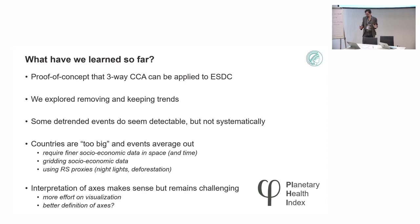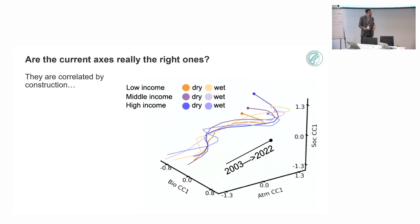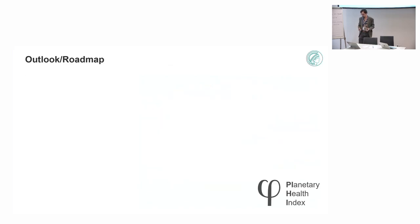The interpretation of axes also makes sense for now, but remains challenging. And we need to do some effort on visualization and the definition of the axes. Because one thing, I showed you these trajectories, but to a point, they are quite correlated by construction. So should we really see bio CC1 versus atmospheric CC1 and socioeconomic CC1? Maybe we need to squeeze out information out of these and highlight more what makes the differences of these groups rather than seeing all these trends going in the same direction, because that's how they are constructed to be.